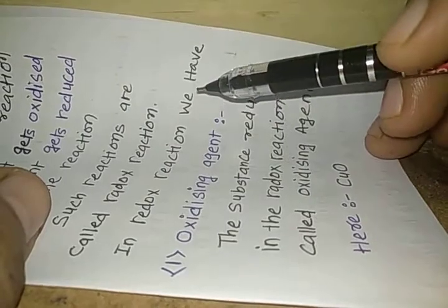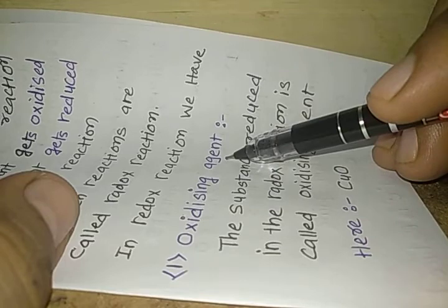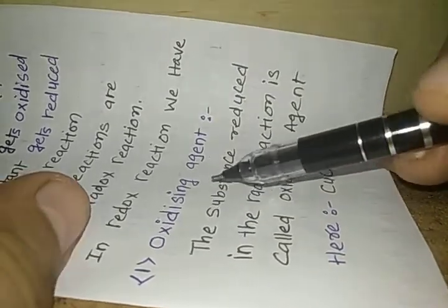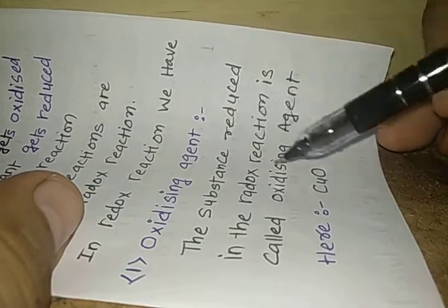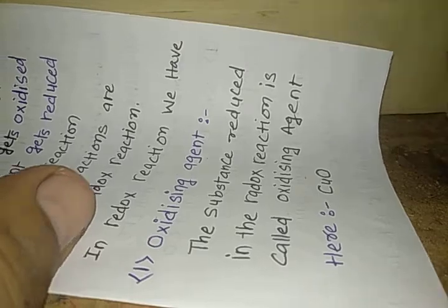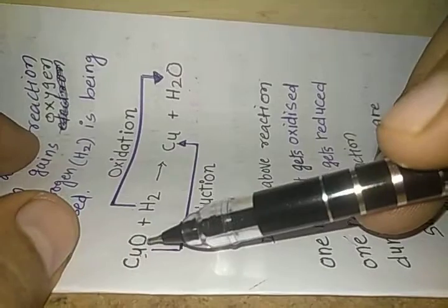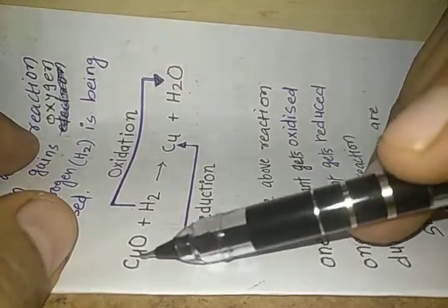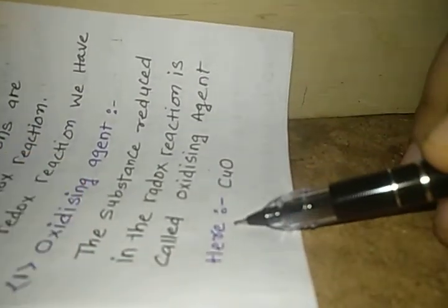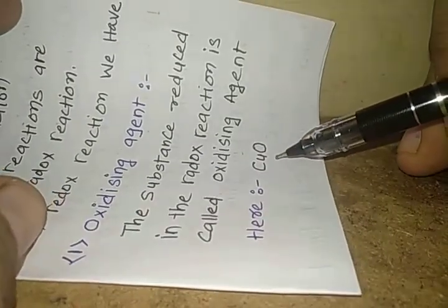In a redox reaction we have two important agents. The first is the oxidizing agent. The substance that is reduced in the redox reaction is called the oxidizing agent. Here, CuO — copper two oxide — is reduced, so it is known as the oxidizing agent.